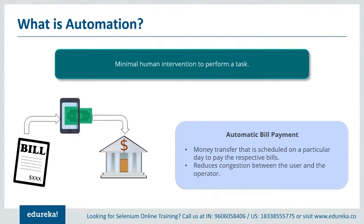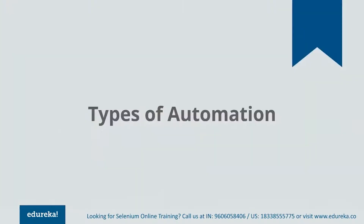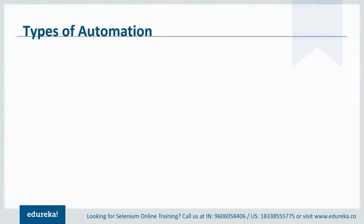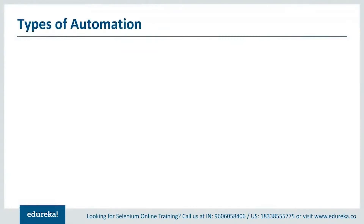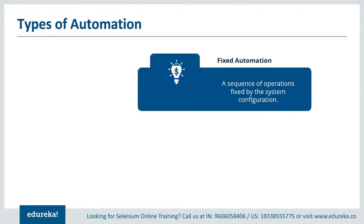Now that you've understood what is automation, let's try to understand the different types of automation that exist. There are basically three types depending on the process which the user defines: fixed automation, programmable automation, and flexible automation. Fixed automation is nothing but a sequence of various operations that remains fixed and cannot be scheduled or customized by the user. This type of automation is mainly used in the mechanical industry to carry out a desired job.